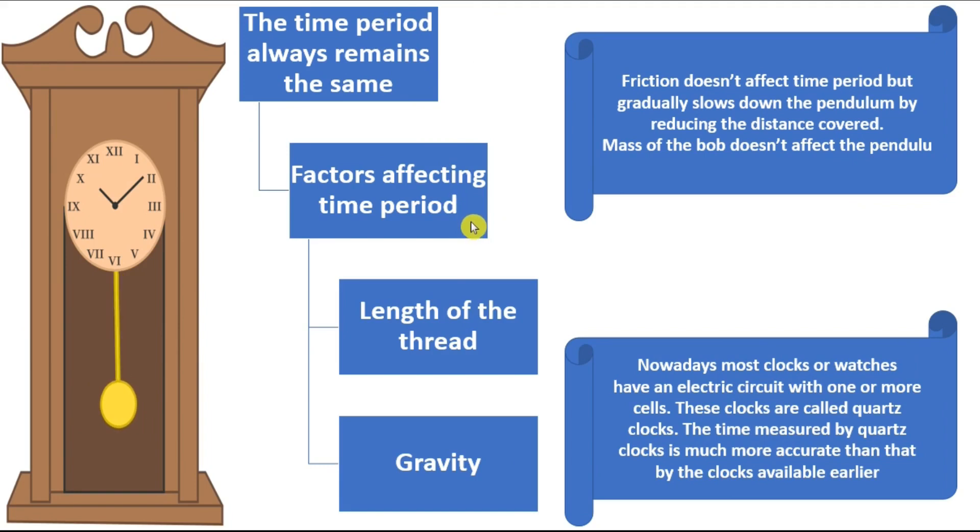The time period. There are some factors affecting the time period. They are the length of the thread and the gravity of the area. Friction doesn't affect the time period but gradually slows down the pendulum and also reduces the distance covered. Because of this, the time period will remain the same. Mass of the bob doesn't affect the pendulum. If I tie a ball of 1 kg to the thread or if I tie a ball of 500 grams, the time period will still remain the same. Only the factors that affect are the length of the thread and the gravity.